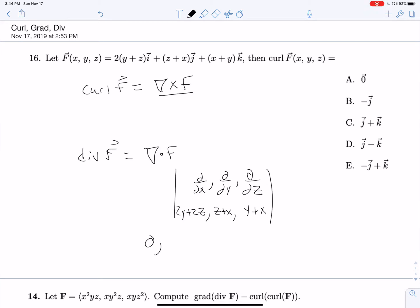Or sorry, not negative 1. This is 1, comma, negative 1. There we go. And so we can express this in terms of i, j, k as curl F is equal to j minus k. There we go.